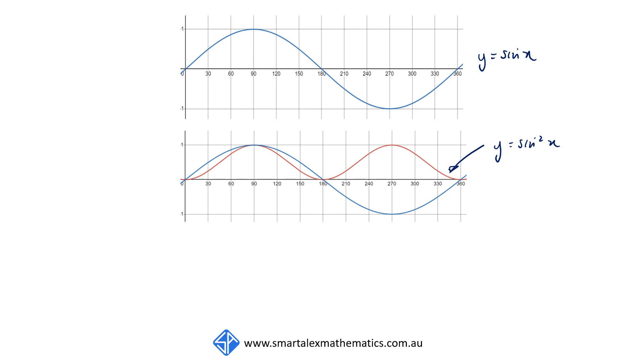The sine squared x function is always positive. When sine x is positive, sine squared x is positive. When sine x is negative, we square that and sine squared x is positive. When sine x equals zero, sine squared x is also zero. When sine x equals one or negative one, the square of one or negative one will be equal to one.